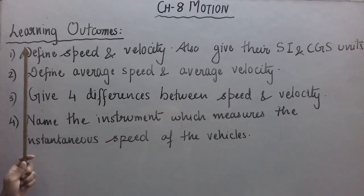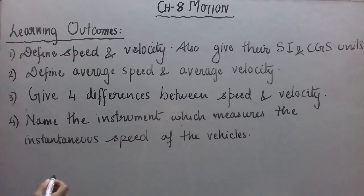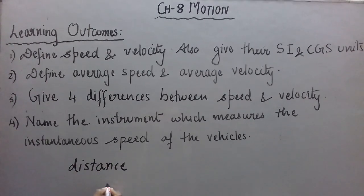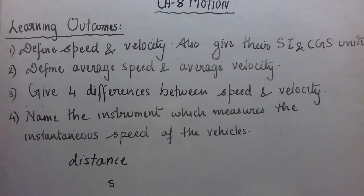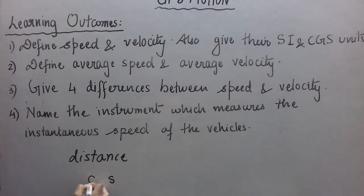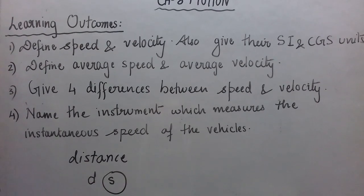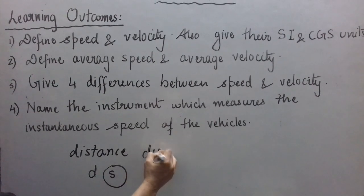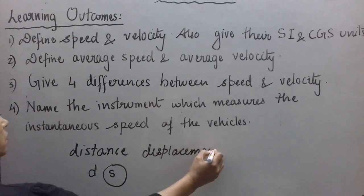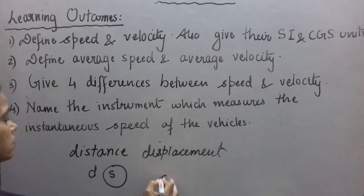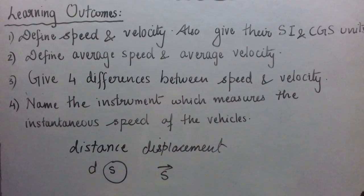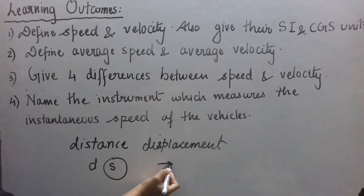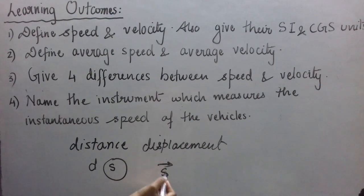Before we start achieving these learning outcomes, you should know that distance is generally represented in our books by the symbol small 's'. Sometimes it is also represented by 'd', but we will prefer the symbol 's' for distance. Displacement is represented by 's' with an arrow sign above it, because displacement is a vector.